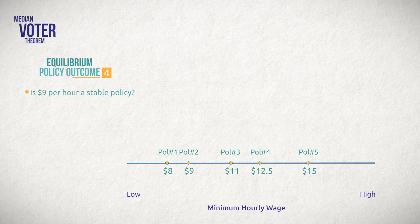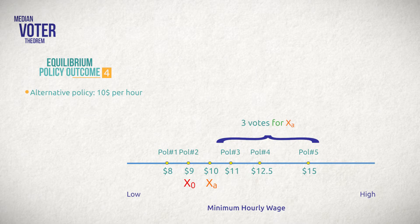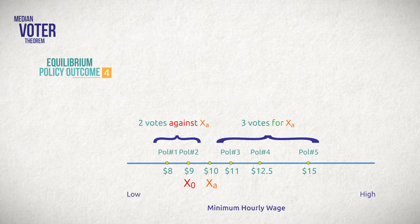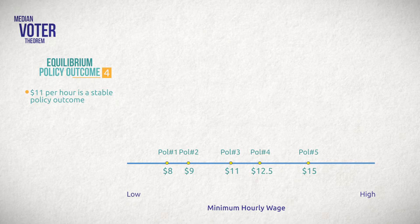To highlight the concept of equilibrium, let's simply ask whether a minimum wage of nine dollars per hour is a stable policy. I will use X naught to represent a status quo or current policy. Let's compare X naught to an alternative minimum wage, X subscript A, of ten dollars. Since a minimum wage of ten dollars is closer to the ideal points of policymakers number three, four, and five, each of these three will vote for ten dollars over nine dollars. Only policymakers number one and number two will vote against ten dollars because it moves policy further away from their ideal. With three in favor and two against, the minimum wage policy will change to ten dollars. This of course means that nine dollars is not a stable equilibrium. It turns out that any policy not equal to eleven dollars is not a stable equilibrium. The reason is that for any policy not equal to eleven dollars, there is an alternative minimum wage proposal that would win a simple majority vote.